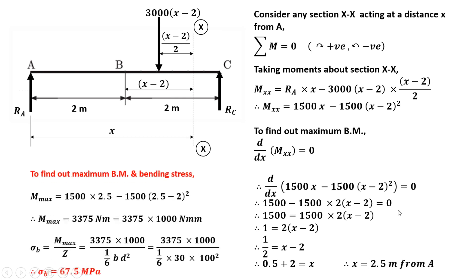To find the maximum bending stress, we first calculate the maximum bending moment by substituting x equals 2.5 into the expression for Mxx. The value obtained is 3375 Newton-meter, or 3375 × 10³ Newton-mm. Maximum bending stress σb equals M divided by Z, where Z is the section modulus equal to (1/6)bd². With width 30 mm and height 100 mm, the calculated maximum bending stress is 67.5 MPa.